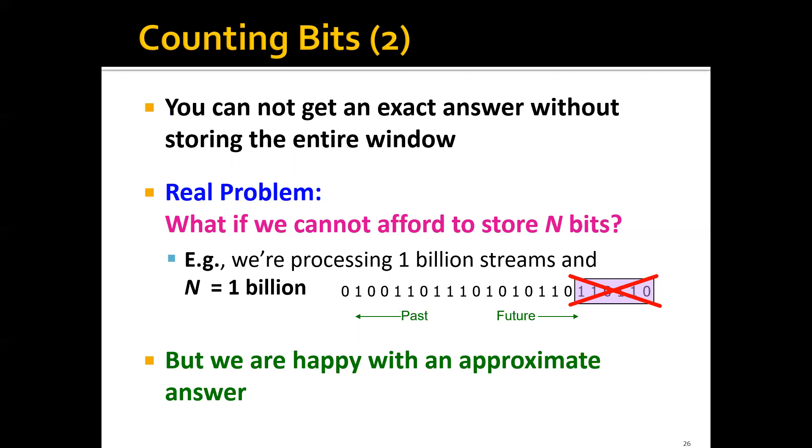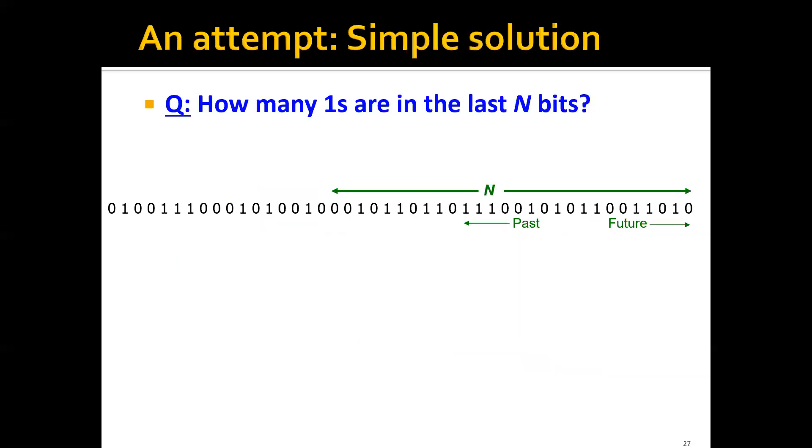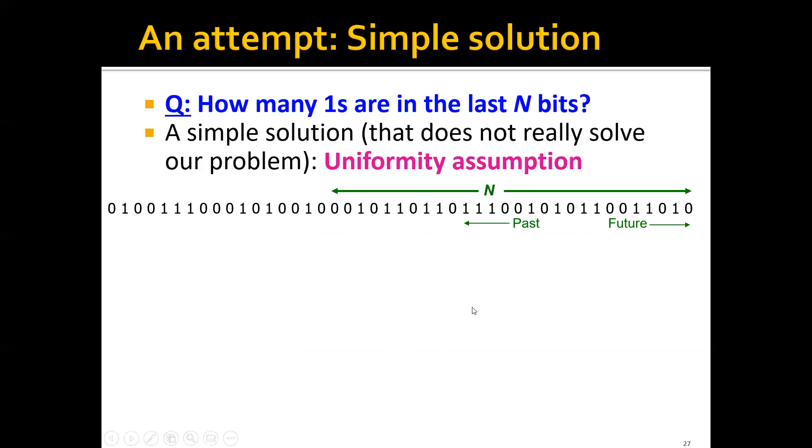But one good news is that if we are happy with an approximate answer, then there might be something we can do. For example, the problem we have is how many 1s in the last N bits. One simple solution that doesn't really solve our problem is to use the uniformity assumption.